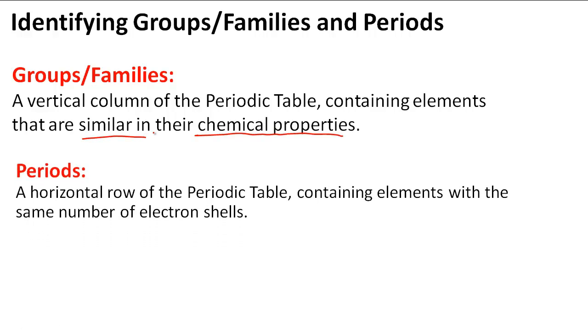Next thing we have are periods. It's a horizontal row of the periodic table, so going in this direction. The column is the vertical row going up and down. The horizontal row contains elements with the same number of electron shells or energy levels.